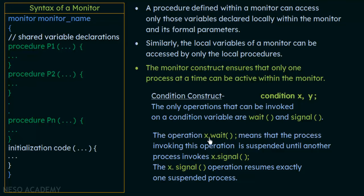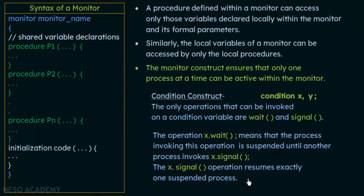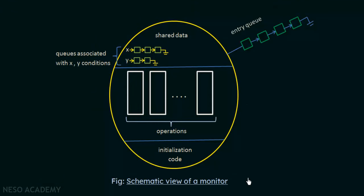These are the main things in monitors — the condition construct is also used when designing them. Now, looking at the schematic diagram of a monitor: the entire structure is the monitor, with shared data declared inside, and operations (the procedures) that perform actions on the shared data.